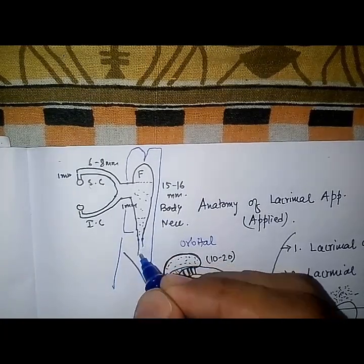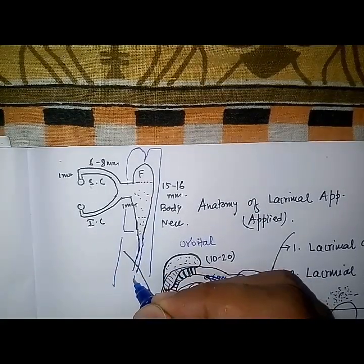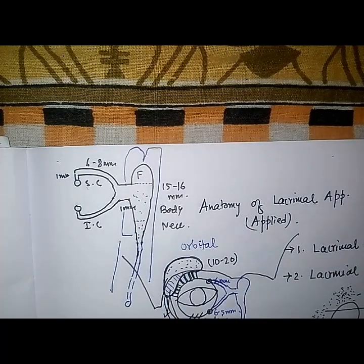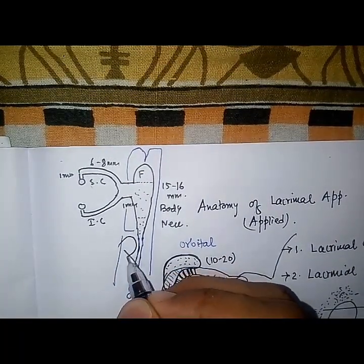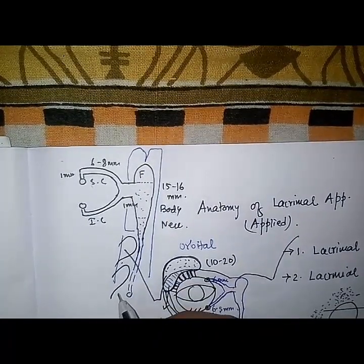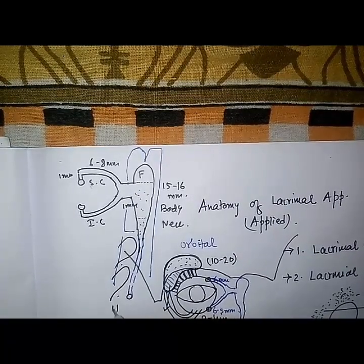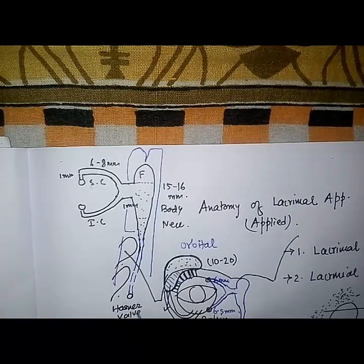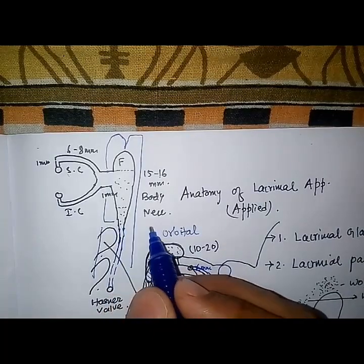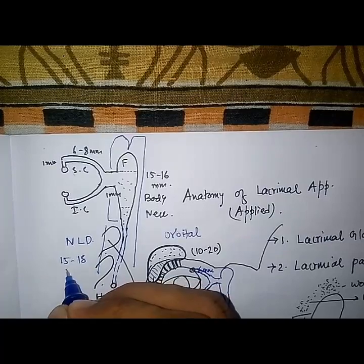The lacrimal sac continues downward, backward, and laterally as the nasolacrimal duct, opening into the inferior meatus of the nose. There is a valve known as the Hasner's valve, formed by thickening of the mucosa. The nasolacrimal duct is mainly 15 to 18 millimeters in length.